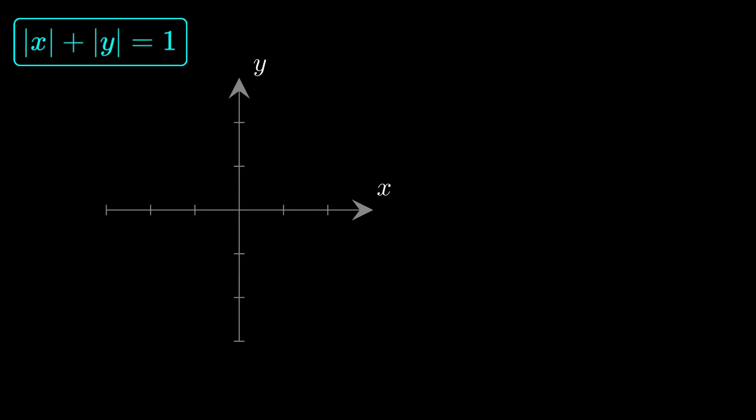Now let's set the exponent to 1. This gives the equation absolute x plus absolute y equals 1. In the first quadrant, both x and y are positive, so this simply becomes x plus y equals 1. It's not curved at all. It's a straight line segment.